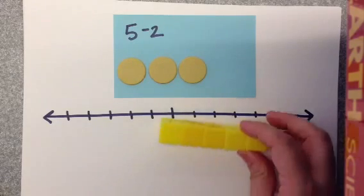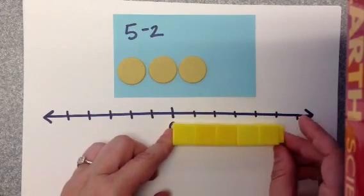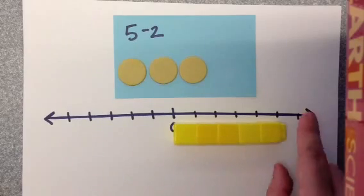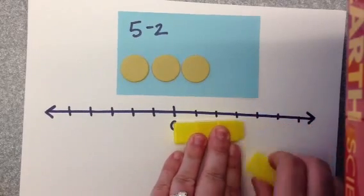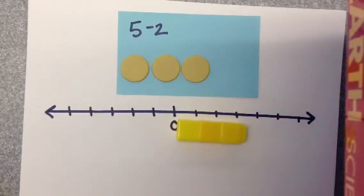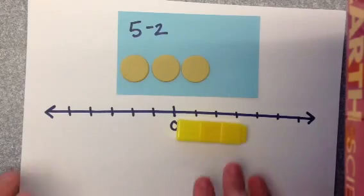You can do the same with the Unifix blocks. We have 5 blocks, and then they can take away 2. And they're left with 3. Again, this is to connect them to what they already know.